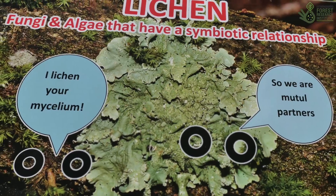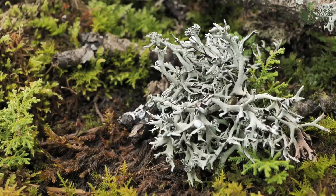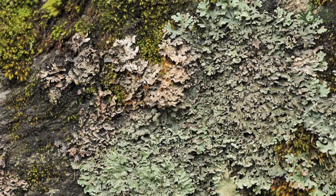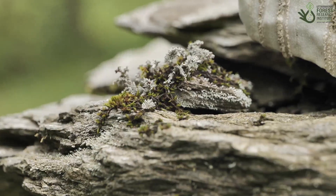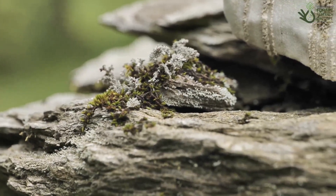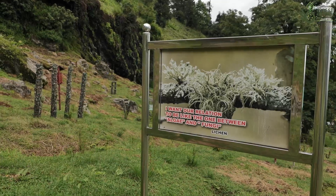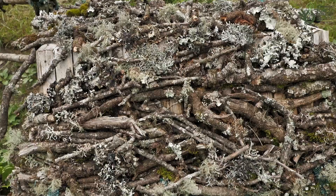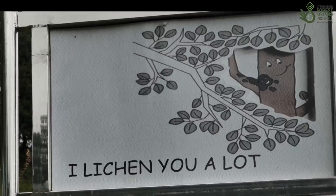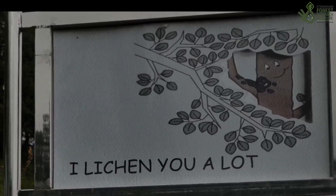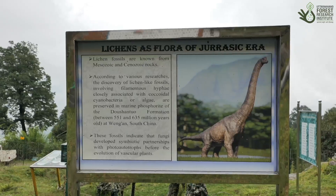Lichen is a composite organism formed by a symbiotic relationship between algae and fungi. In this association, algae provides the source of food to the fungi, and fungi in return provides shelter to the algae. In this conflict-dominated era, this lifelong relationship between algae and fungi is nature's message to mankind for peaceful and everlasting coexistence.